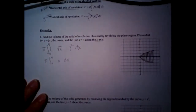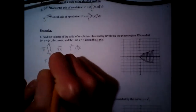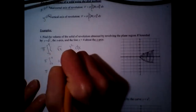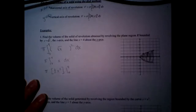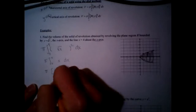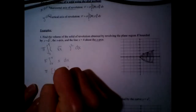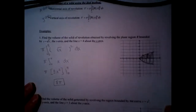The nice thing is the square root and the squared cancel out, so it's just x. The antiderivative is ½ x², evaluated from 0 to 4. Plugging in 4: 4² = 16, half of that is 8, times π. So the answer is 8π cubic units.